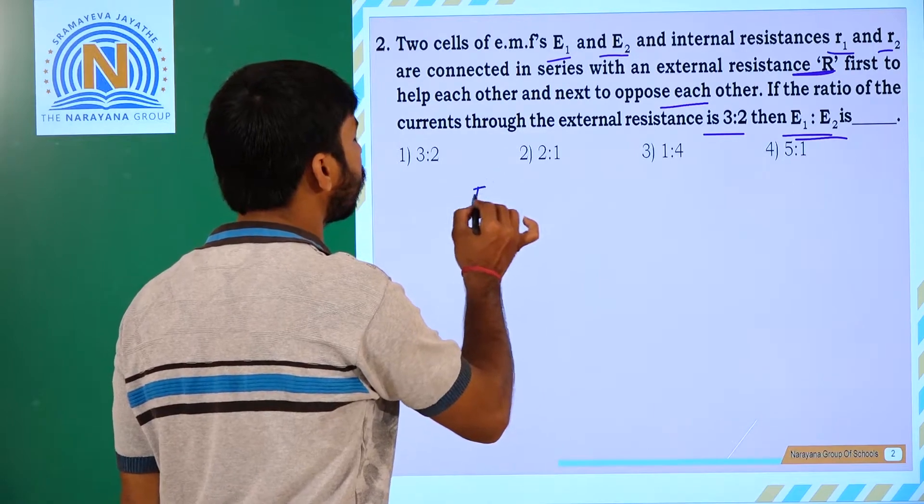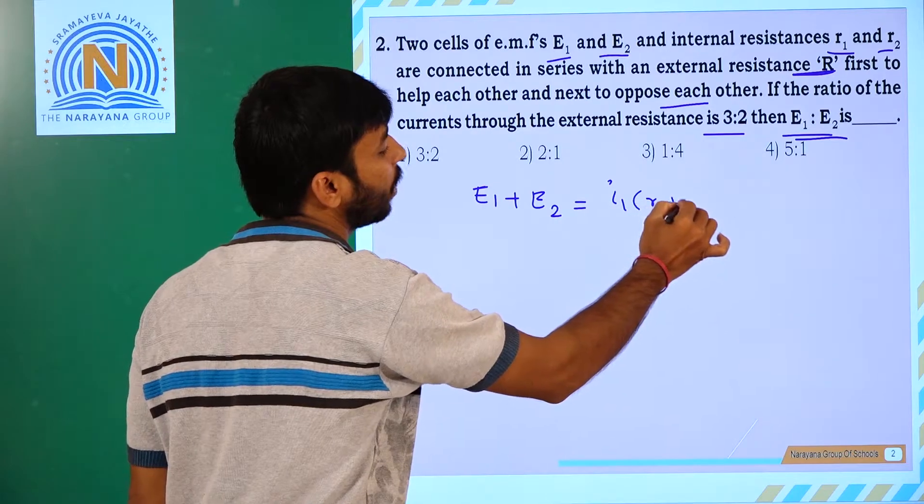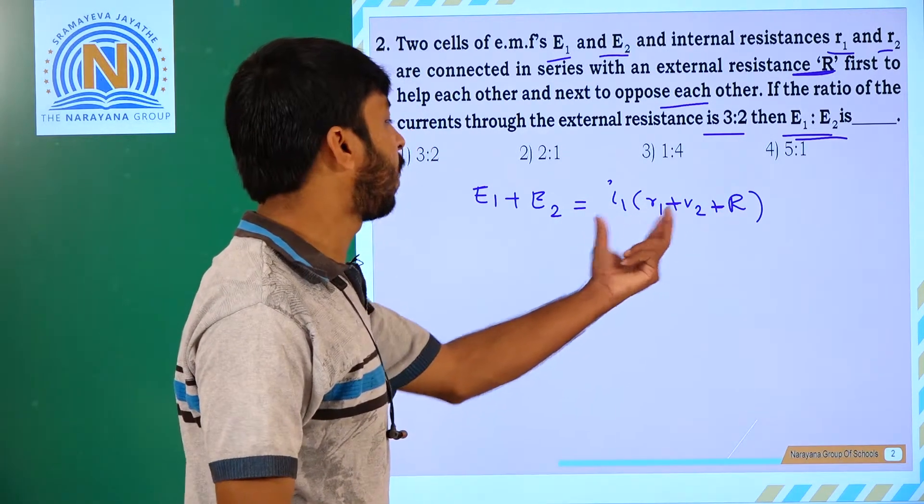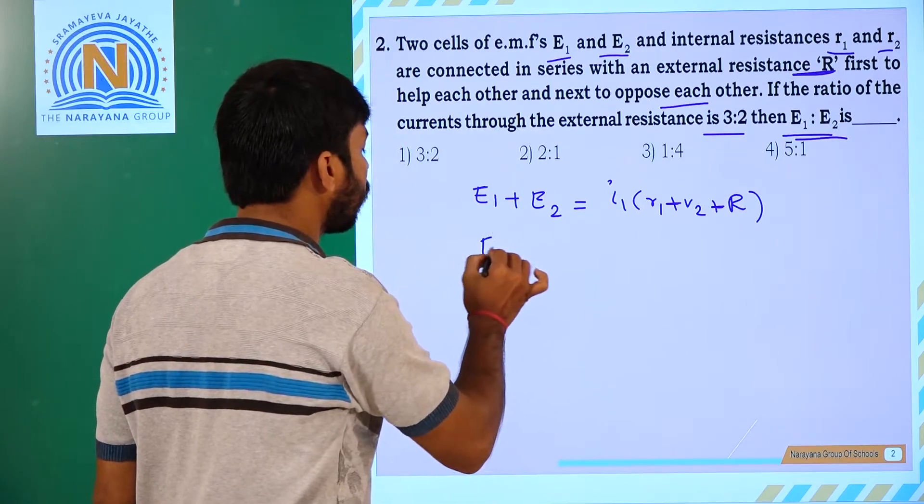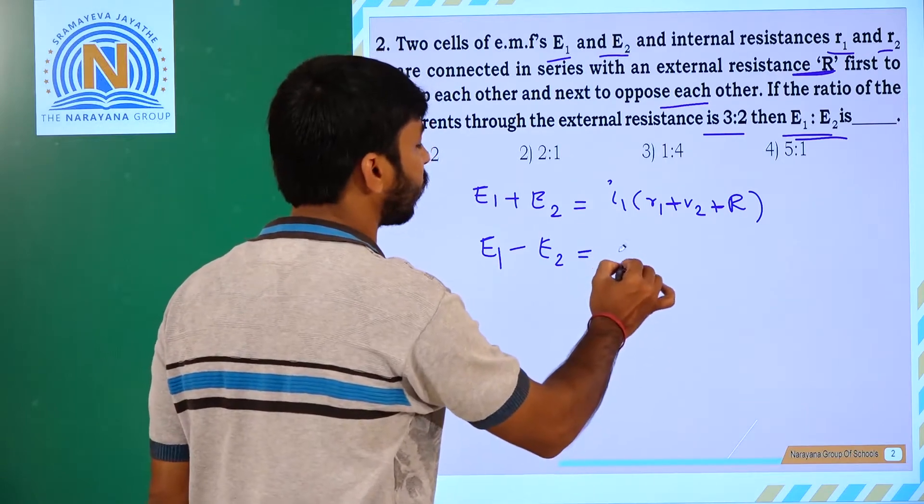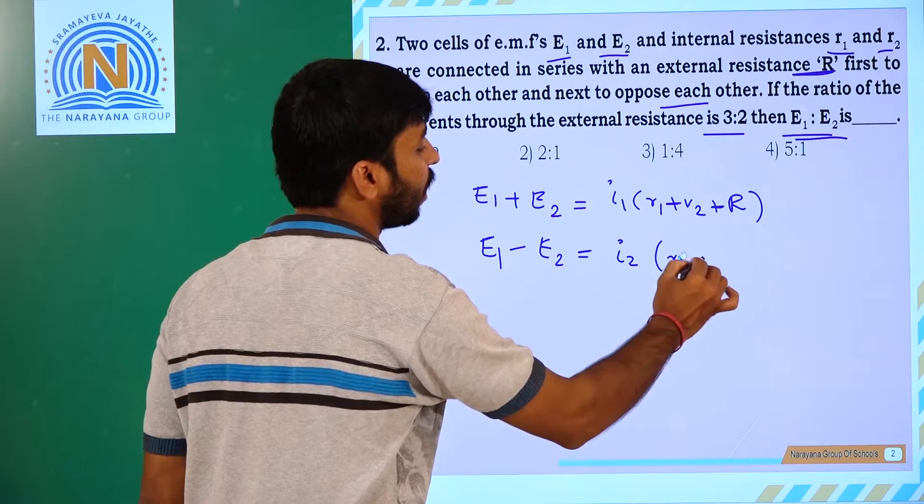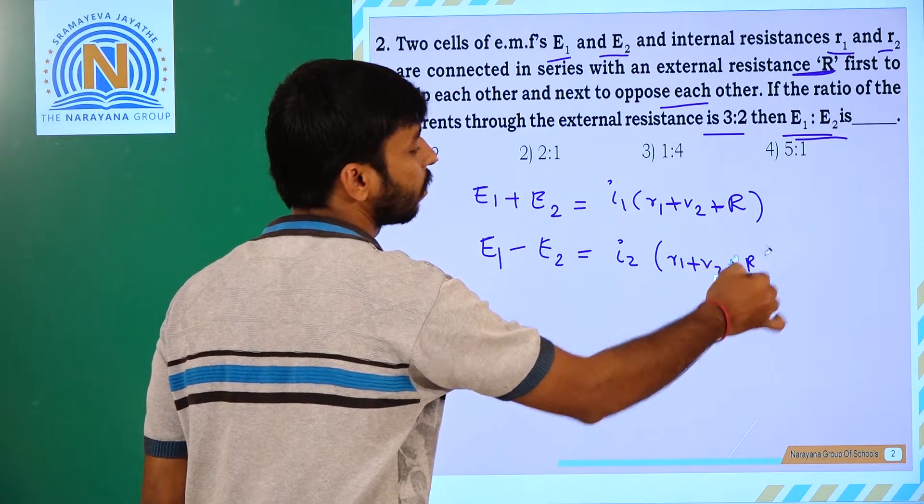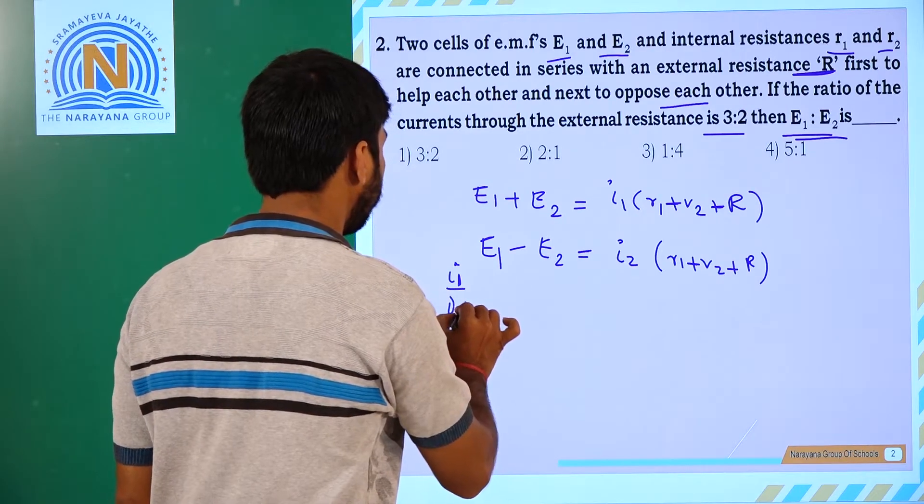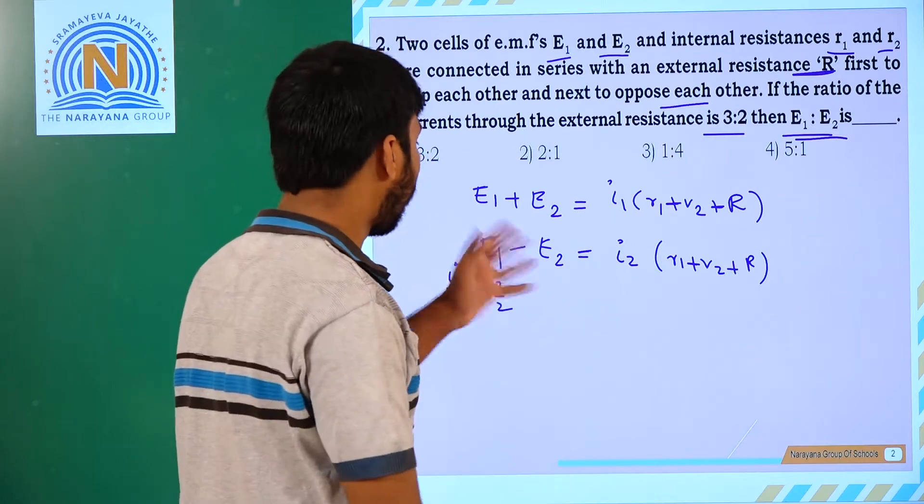E1 plus E2 is equal to I1 into R1 plus R2 plus R. And when E1 opposes, E1 minus E2 is equal to I2 into R1 plus R2 plus R. So I1 by I2 is equal to 3 by 2. We have to add these equations.